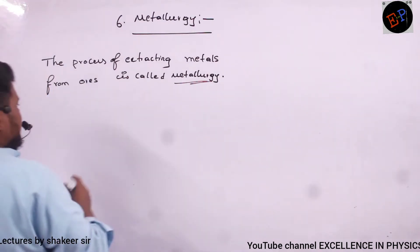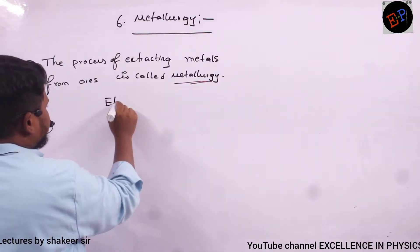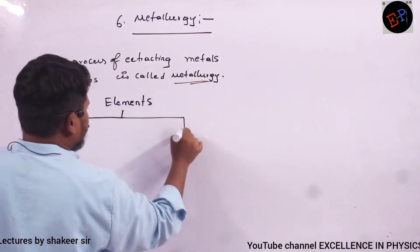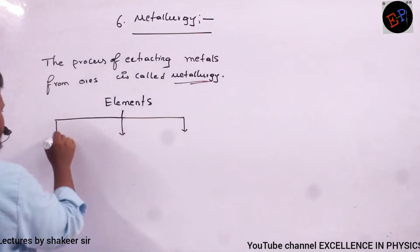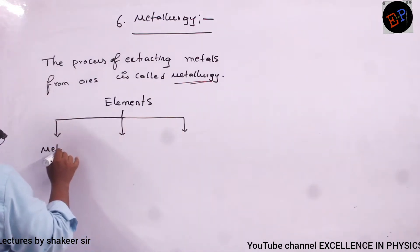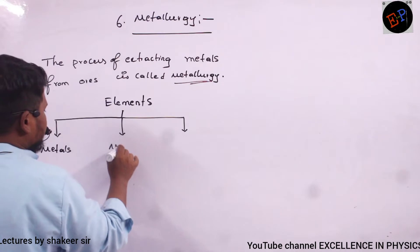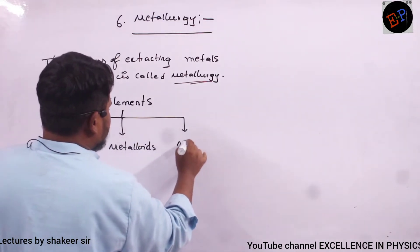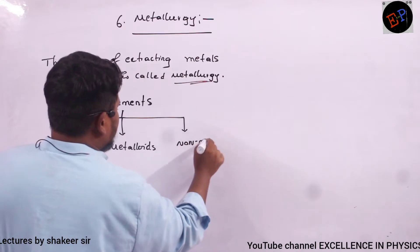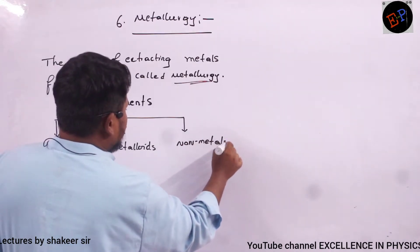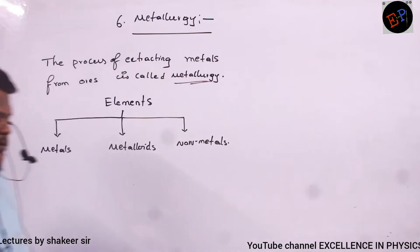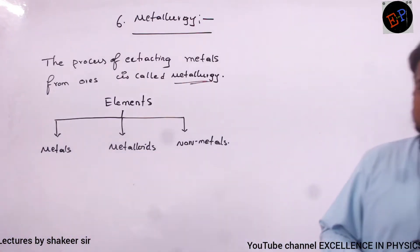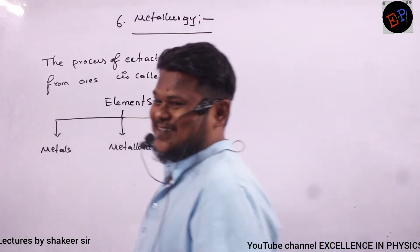All the elements can be divided into three types: metals, metalloids, and non-metals. So all the elements in the periodic table can be divided into these three types.